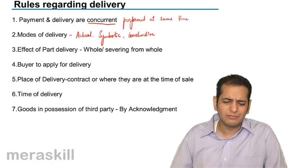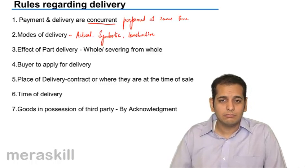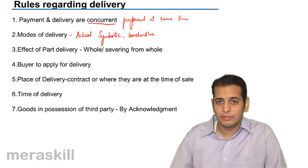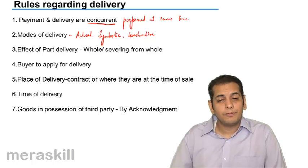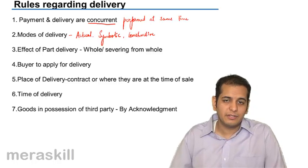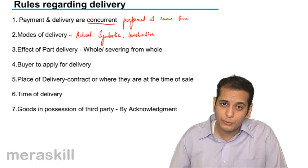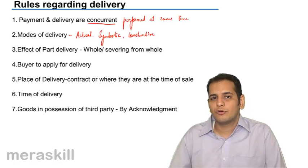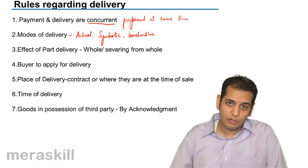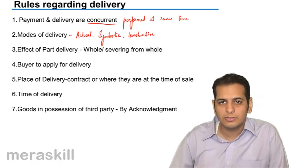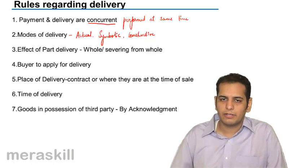Fourth, buyer to apply for delivery. It is the buyer who has to apply for delivery. If the goods are specific or ascertained, the property gets transferred when the contract is made, making the buyer the owner. So it is his duty to remove the goods and take delivery. He should be the person who applies to the seller for delivery.